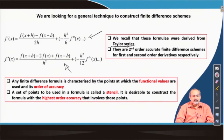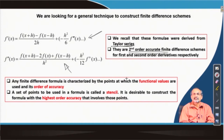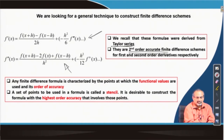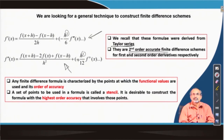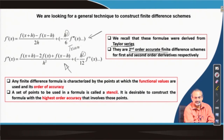Incidentally, both of them are second-order accurate finite difference schemes representing the first and second derivatives. That comes out from the order of these terms which you have in the truncation error. You may recall that these terms are the leading error terms.